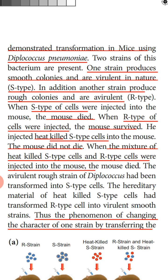There are two strains of Diplococcus pneumoniae. One strain produces smooth colonies when cultured — these are virulent, meaning highly disease-causing, and are called the S-type. Another strain produces rough colonies and is avirulent — not very harmful — called the R-type.